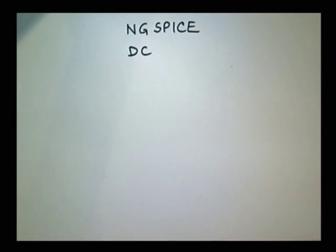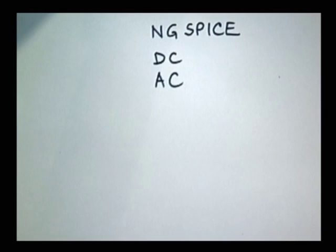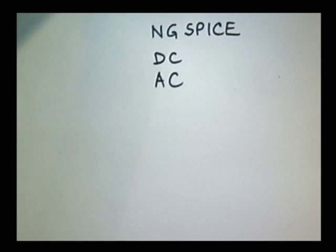irsim essentially does a transient simulation — it gives you waveforms as a function of time. SPICE does that too, but apart from that the major kinds of analysis in ngSpice include DC analysis, where you apply DC and find bias points, sweep DC voltages and see the results. There is also AC analysis, where you set up the equivalent circuit and get the small signal response — this is a small signal analysis, not a large signal analysis.